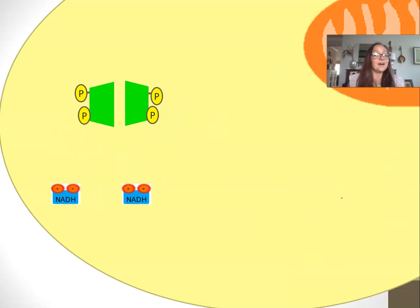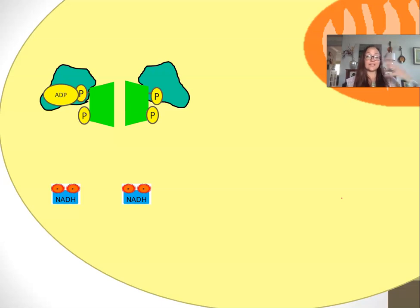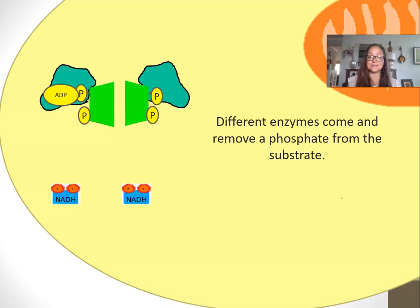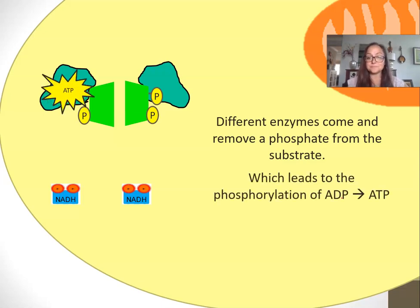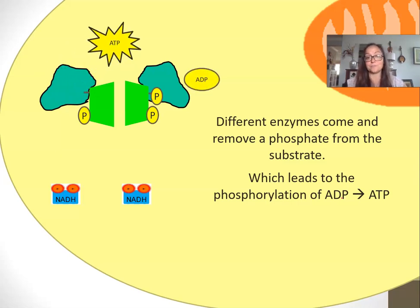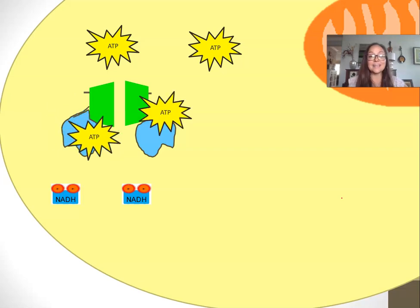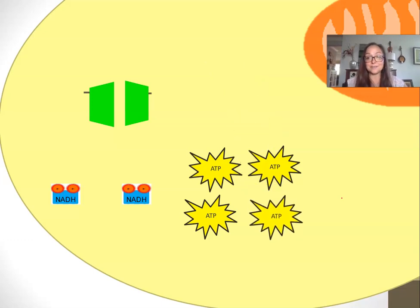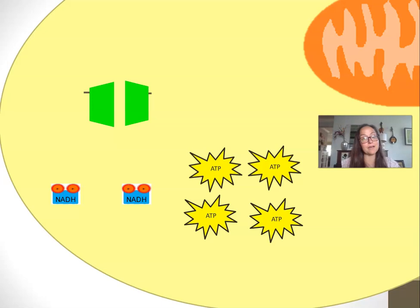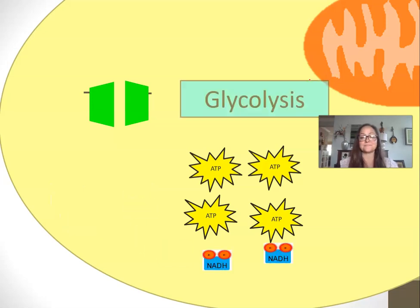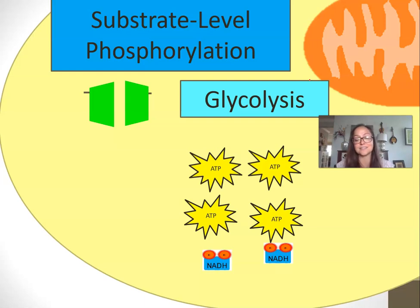Here, our next step we have enzymes that are going to actually phosphorylate ADP. We're going to take the phosphate off of the substrate and add it to ADP, so we're going to phosphorylate ADP into ATP. As you can imagine from looking at the picture, this is going to happen four times, each time controlled by an enzyme. At the end of glycolysis, we end up with four ATP that were made. The process of making ATP during glycolysis is called substrate-level phosphorylation.